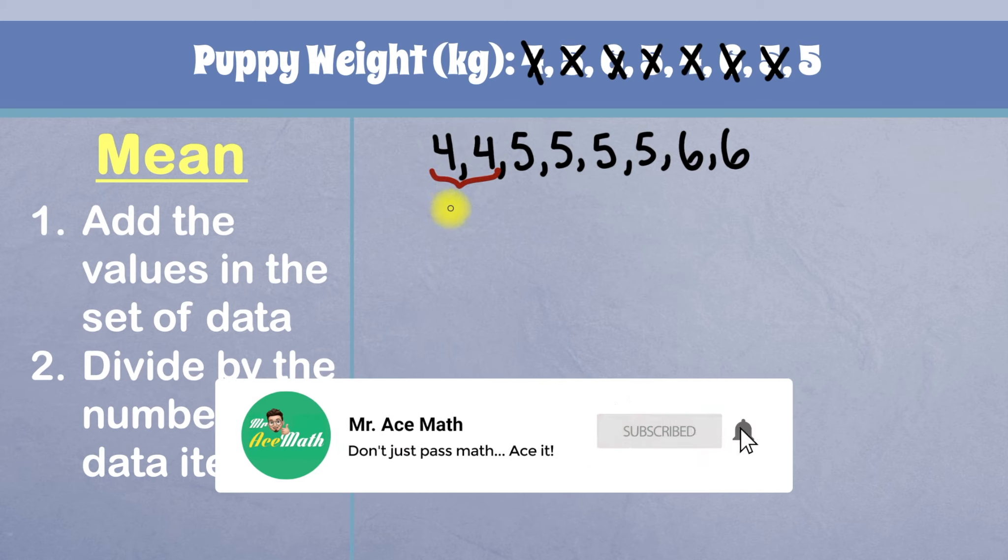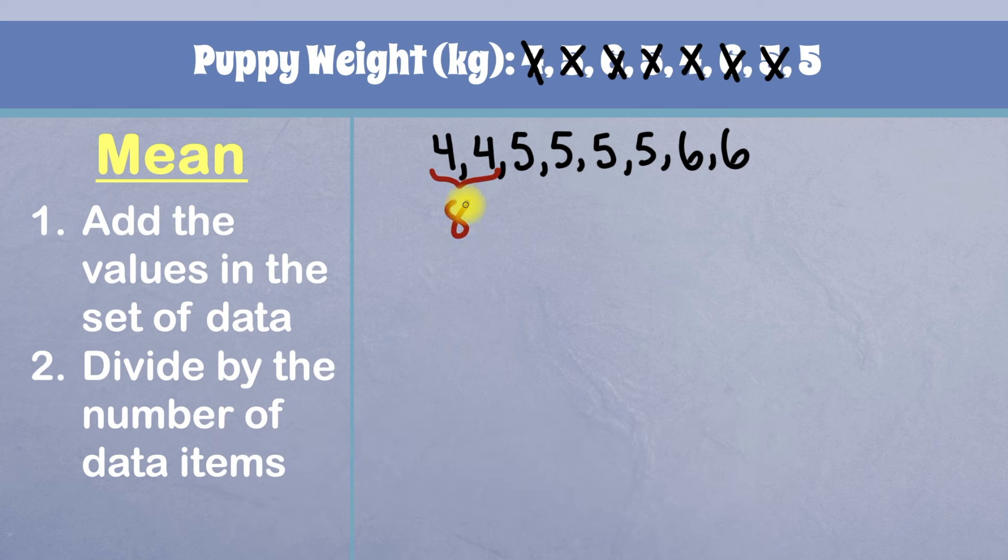four plus four will give us eight. And then I'll add these two, five plus five gives us 10. Then here we've got five plus five, that gives us another 10. And finally six plus six, which gives us 12.